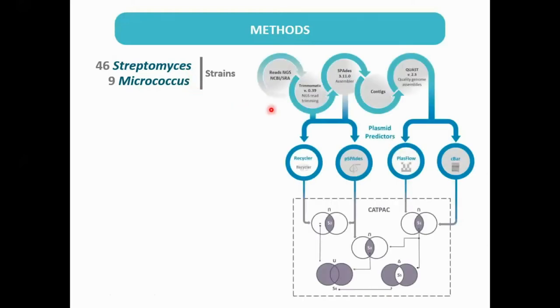Here you can see a typical workflow for genome assembly where from short sequence reads we obtained a set of contiguous linear sequences or contigs. We used four independent tools for plasmid prediction: Plasmidspades and Recycler, which analyze potential circular topology plasmid sequences from the assembly diagram, and Plastflow and C-bar, which predict linear or circular plasmid fragments from contigs.